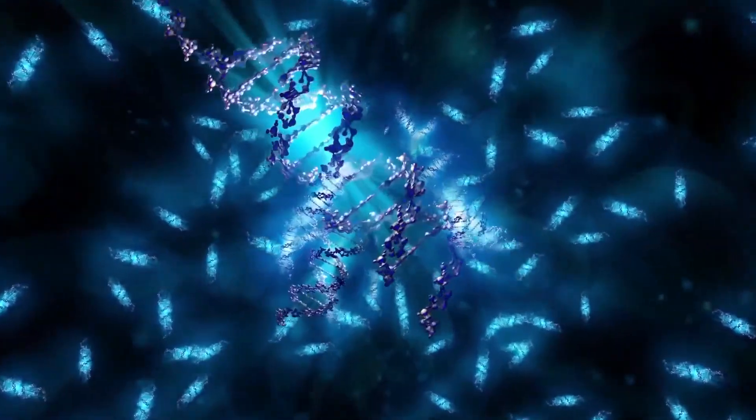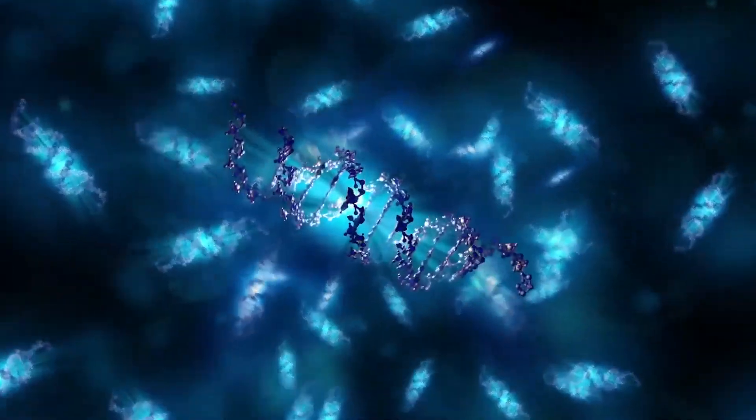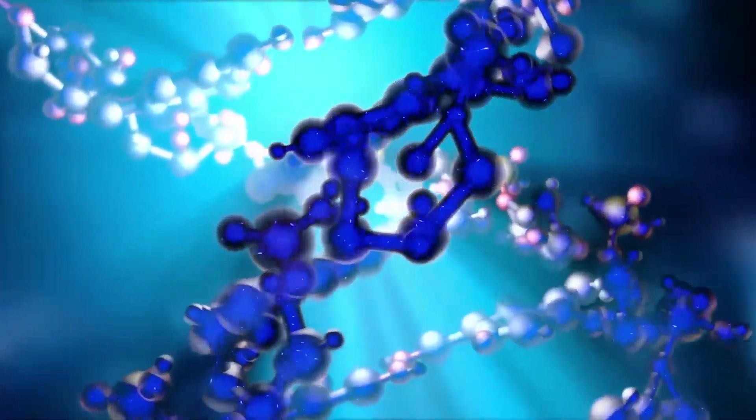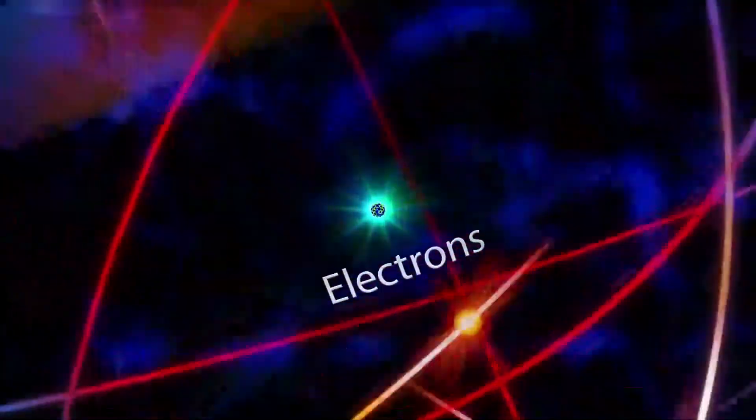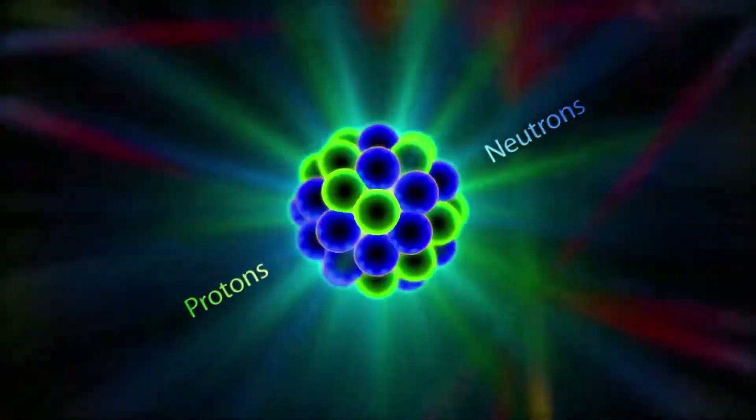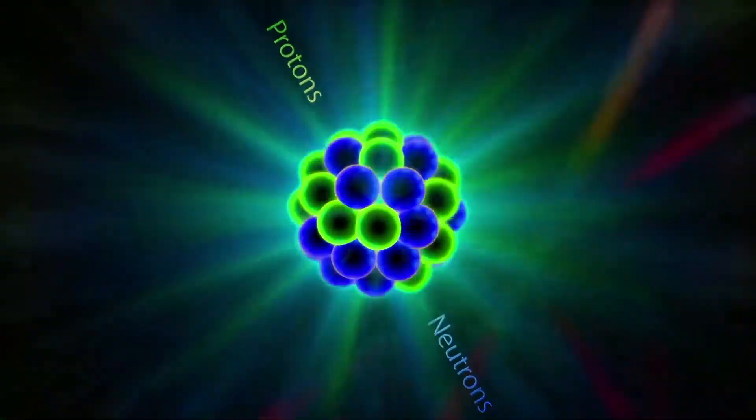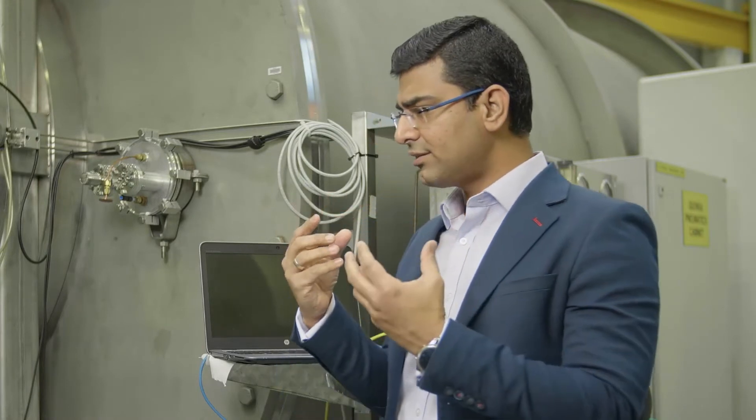So you would ask why we use neutrons. To understand that, we need to understand how small atoms, nuclei, and neutrons are. If you take one human hair and divide it one million times, that becomes one atom, which is smaller than one nanometer. Inside that atom you have a nucleus, which is 100,000 times smaller than the atom. That nucleus is made of neutrons and protons. So if you want to understand the structure of any material at the nanoscale level, then you need to use neutrons, as their length scale aligns with the structure you want to study.